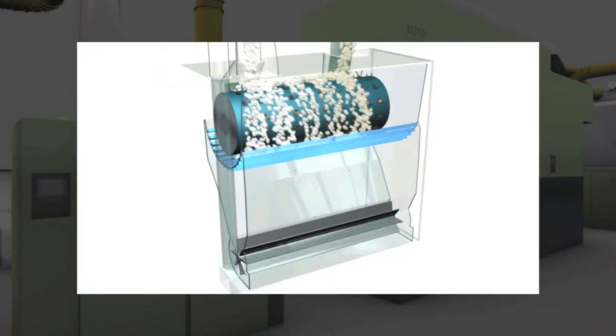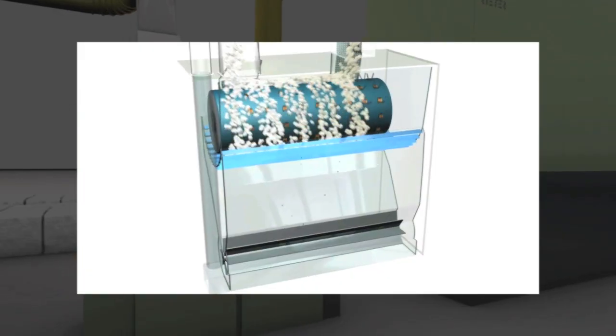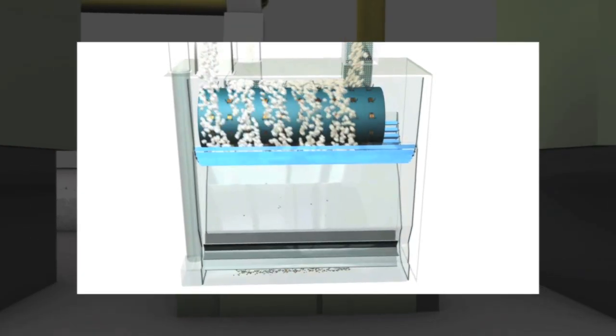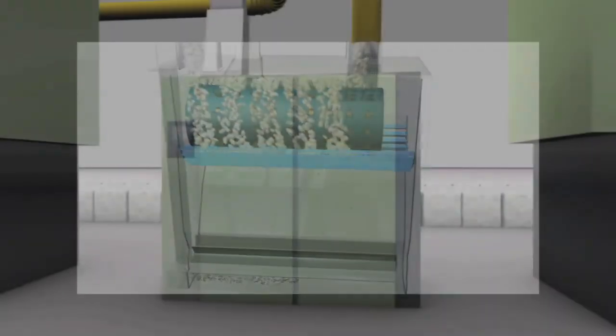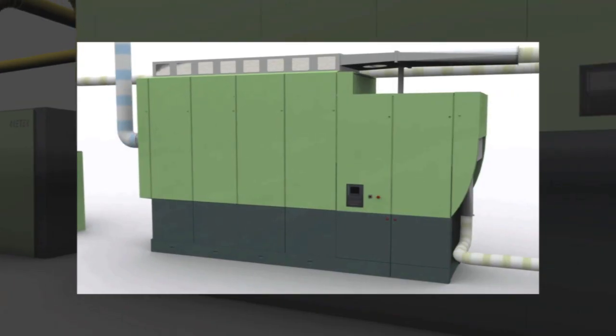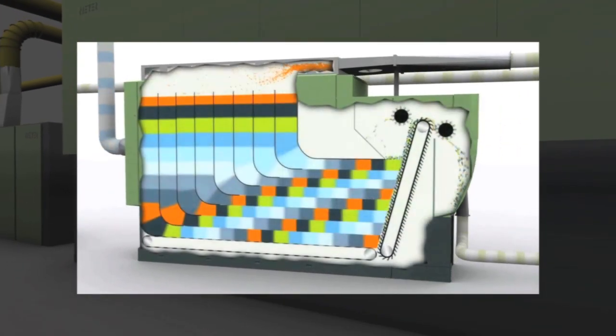Opening rollers pluck the coarse fiber material into pieces and remove dirt particles. To achieve a fiber mixture that is as homogeneous as possible, the tufts must be mixed intensively several times.